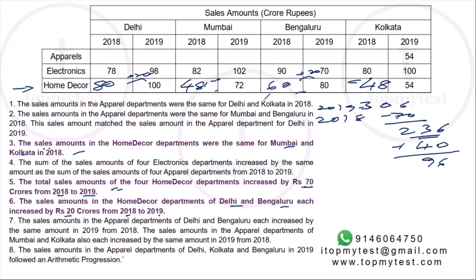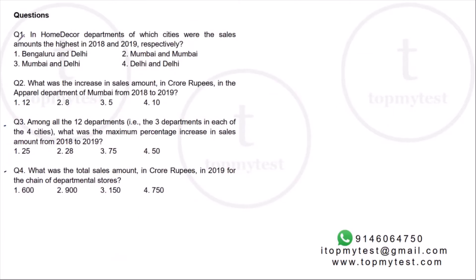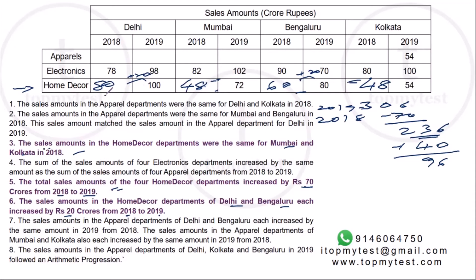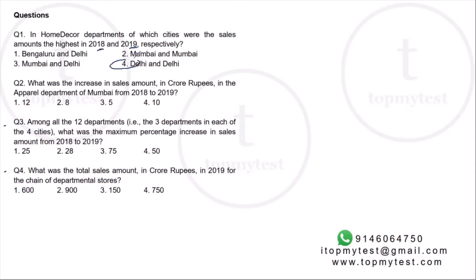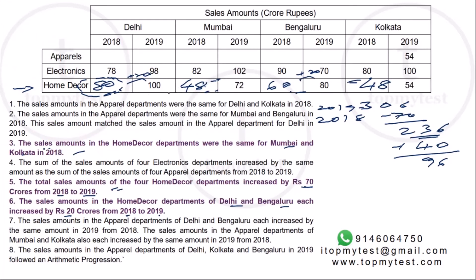Now I can answer Question 1: in the home decor department, which city had the highest sales in 2018 and 2019 respectively? In 2018, Delhi is the highest. Looking at the options, option 4 is the correct choice. In 2019, Delhi is again the highest at 100. So in both cases it's Delhi — option 4.